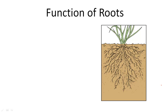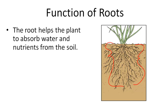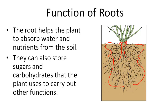The first plant structure we're going to talk about is roots. Roots are all of these things that you see below the ground. The root helps the plant absorb water and nutrients from the soil. It can also store sugars and carbohydrates that the plants use to carry out other functions.